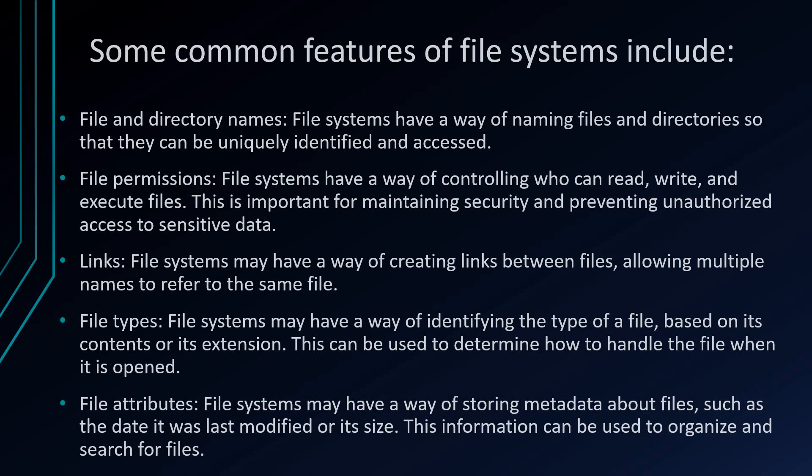There are some common features of a file system. First is file and directory naming — the file system has a way of naming files or directories so they can be uniquely identified or accessed. For example, in Linux, if you put a dot before a name, it becomes a hidden file or directory. Also, a file with the same name in uppercase and lowercase will have different identifications.